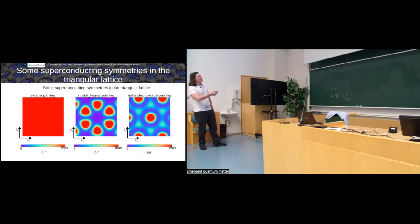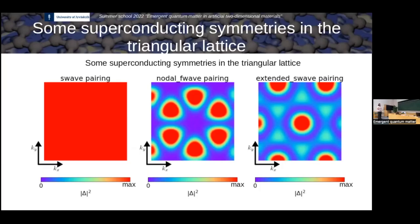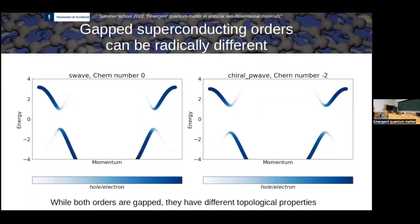The extended S-wave pairing in the triangular lattice is very similar to the square lattice case: depending on the Fermi pocket, you can have a full gap or a nodal gap. Again, extended S-wave is spin singlet, L equal to 0, and may be gapped or nodal depending on the Fermi surface.